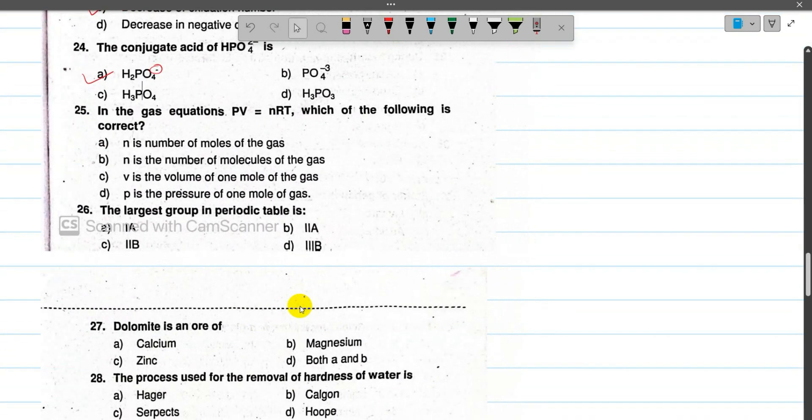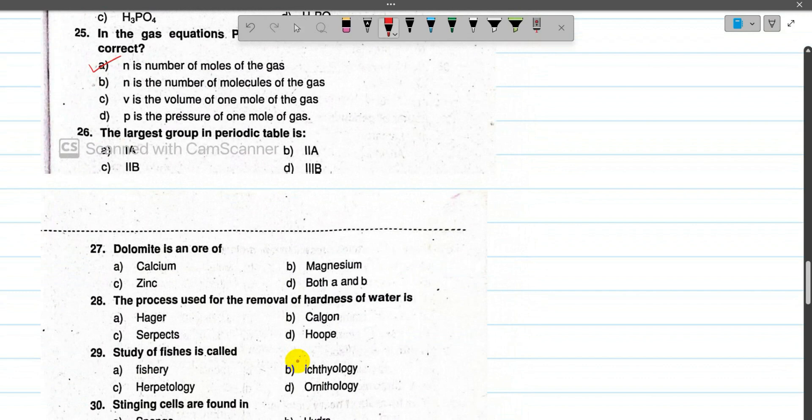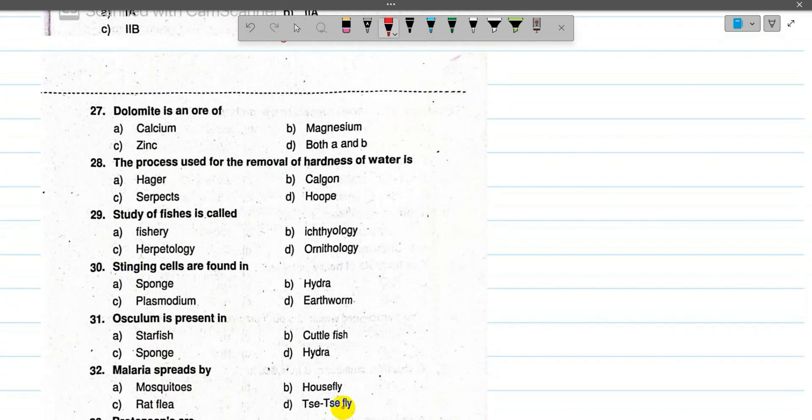Number 25: in the gas equation PV equals nRT, n is the number of moles of the gas. Number 26: the largest group in periodic table is group 3B where the lanthanide and actinide series are found. Number 27: dolomite is an ore of magnesium and calcium both, the answer is both A and B. Its molecular formula is MgCO3.CaCO3. Number 28: The process used for removal of hardness of water is Calgon's process, which uses sodium hexametaphosphate.